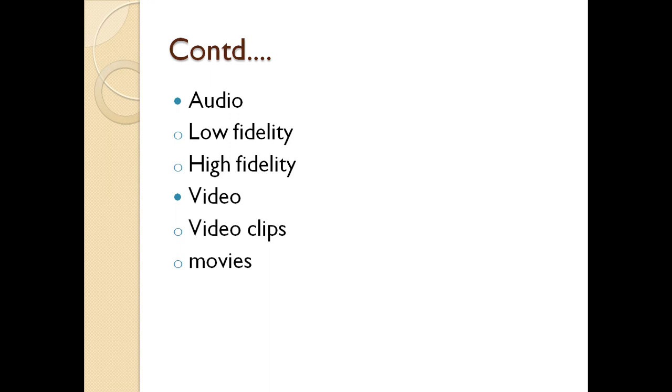In Video we have Video Clips and Movies. Video Clips are short length videos of around 2 to 5 minutes at the max. Movies, as the name indicates, have a length of 1.5 to 2.5 hours. So now we have 4 types of Media: Text, Image, Audio and Video. The combination of 2 or more Media types is called Multimedia.